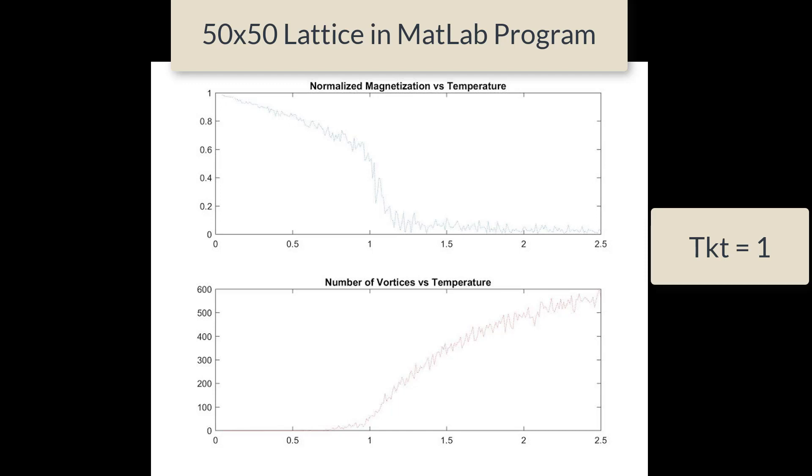For this system, I chose parameters such that T_KT was equal to 1. For a 50 by 50 lattice, I used the MATLAB program to calculate the magnetization and vorticity as a function of temperature. The plot shows that magnetization of the system drops off sharply at T_KT and that vorticity is effectively zero for temperatures below T_KT and non-zero for temperatures above. The fluctuations seen are due to not having enough time to average the results over many trials as well as finite lattice size.